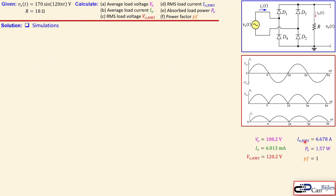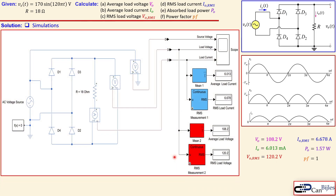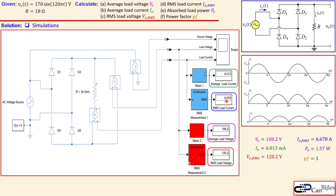Let's collect the results and go to the simulations. The circuit is drawn in Simulink using Simscape elements — you can see the four-diode bridge configuration, the 18-ohm resistor, a current sensor, and voltage sensors for the load voltage and source voltage. The displays confirm: average load voltage = 108.2 V, average load current = 6.013 A, RMS load voltage = 120.2 V, and RMS load current = 6.678 A — all matching our calculations exactly.